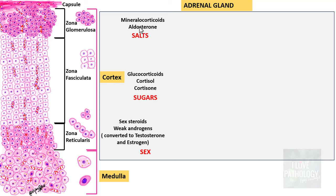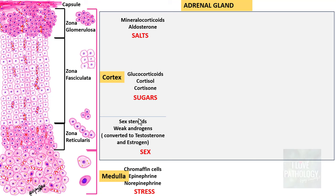The third zone, Zona Reticularis, secretes sex steroids — weak androgens which can be converted to testosterone and estrogen — responsible for the development of secondary sexual characteristics in both sexes. So remember: salt, sugars, and sex for the three cortical functions. Moving to the Medulla, the chromaffin cells secrete epinephrine and norepinephrine, also called Adrenaline and Noradrenaline, which are released in response to stress. So remember: salt, sugar, sex, and stress for the functions of the Adrenal Gland.